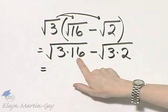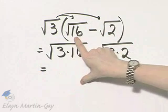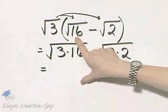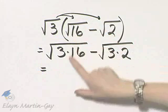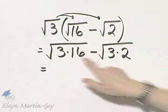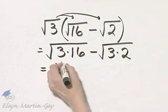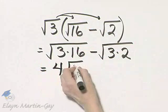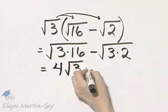Notice 16 is a perfect square. By the way, you could have simplified it right here if you had wanted to, but we're going to do it here anyway. Square root of 16 is 4, and then I still have the square root of 3 minus,